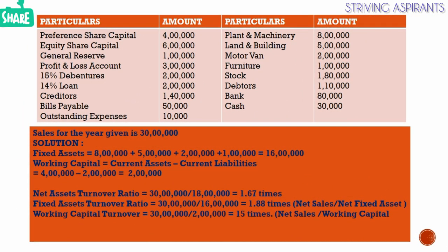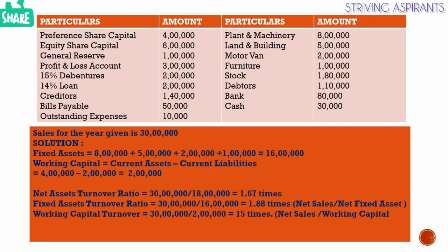Now we will calculate the fixed assets value, which includes plant and machinery 8 lakh plus land and building 5 lakh plus motor vehicle 2 lakh plus furniture 1 lakh, giving fixed assets total of 16 lakh. Next we check working capital, which equals current assets minus current liabilities. Current assets — stock, debtors, bank, and cash — give a total of 4 lakh. Minus current liabilities — creditors, bills payable, and outstanding expenses — gives 2 lakh. So the working capital value is 2 lakh.